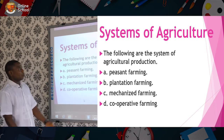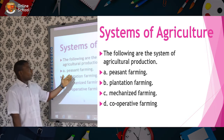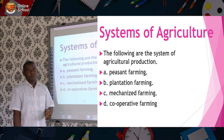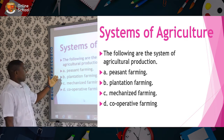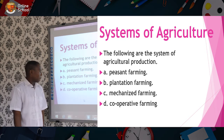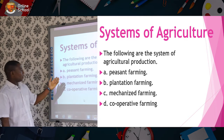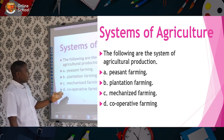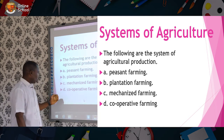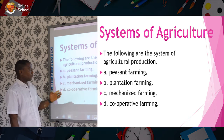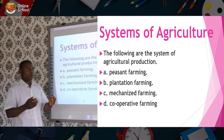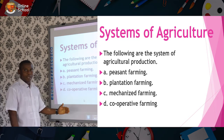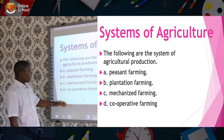System of agriculture. The following are the systems of agricultural production: A, peasant farming; B, plantation farming; C, mechanized farming; D, cooperative farming. But today we are going to concentrate on peasant farming. We'll look at the rest at another time.